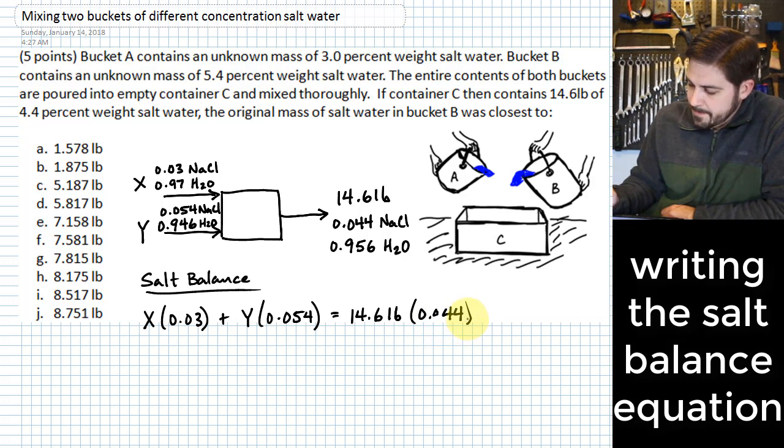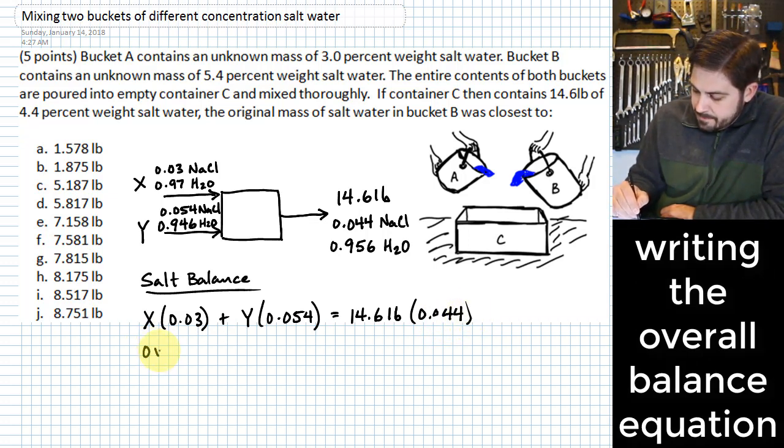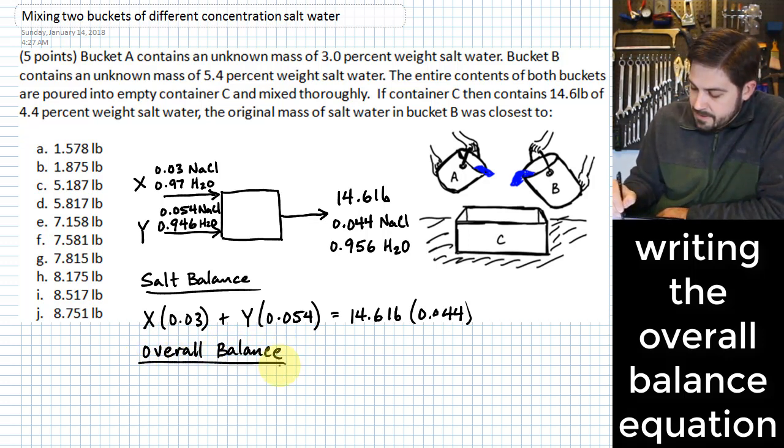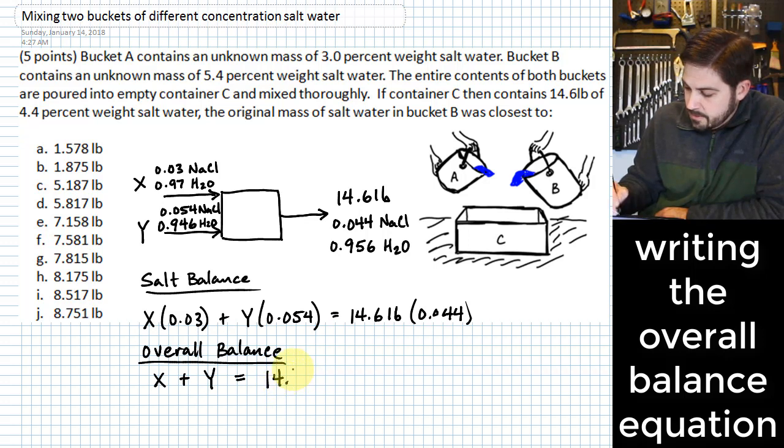All right so then we move on to the overall balance. The overall balance is fairly simple. All we need to do is look at the entire amount that comes in here x add the entire amount that comes in here y and say that that is going to be equal to the entire amount that comes out on the other end, 14.6 pounds.